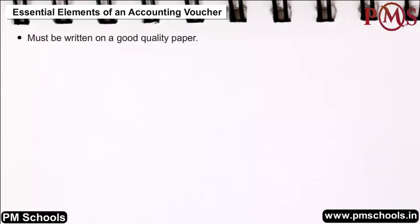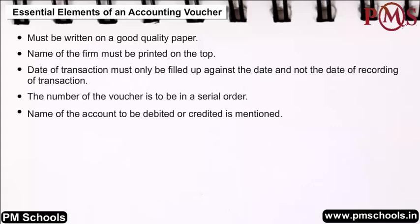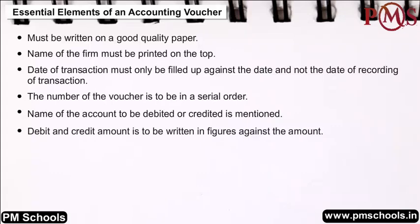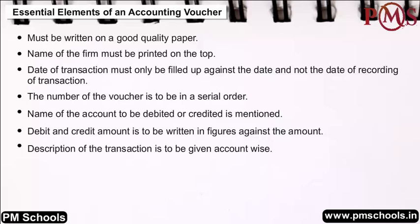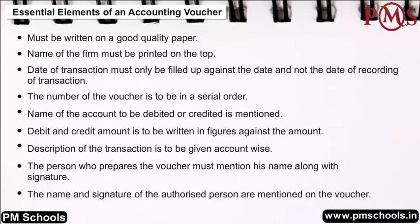Essential elements of an accounting voucher: It must be written on good quality paper. The name of the firm must be printed on the top. The date of transaction must be filled in, not the date of recording. The voucher number must be in serial order. The names of accounts to be debited or credited, debit and credit amounts, and descriptions must be mentioned. The preparer's name, signature, and the authorized person's name and signature must appear on the voucher.